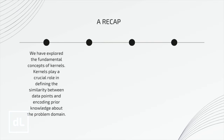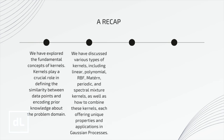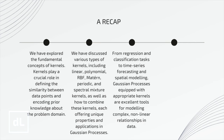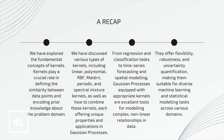Time for a recap. In the kernel cookbook, we've explored the fundamental concepts of kernels, which play a crucial role in defining similarity between data points and encoding prior knowledge. We discussed various types — linear, polynomial, radial basis function, Matérn, periodic, and spectral mixture kernels — as well as how to combine them, each offering unique properties and applications. From regression and classification to time series forecasting and spatial modeling, Gaussian processes equipped with appropriate kernels are excellent tools for modeling complex non-linear relationships, offering flexibility, robustness, and uncertainty quantification.